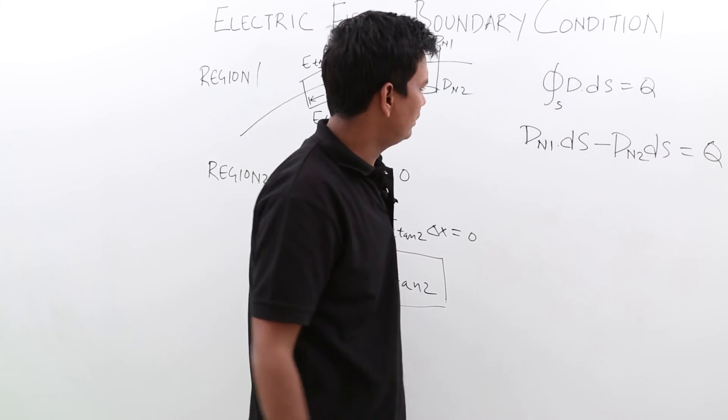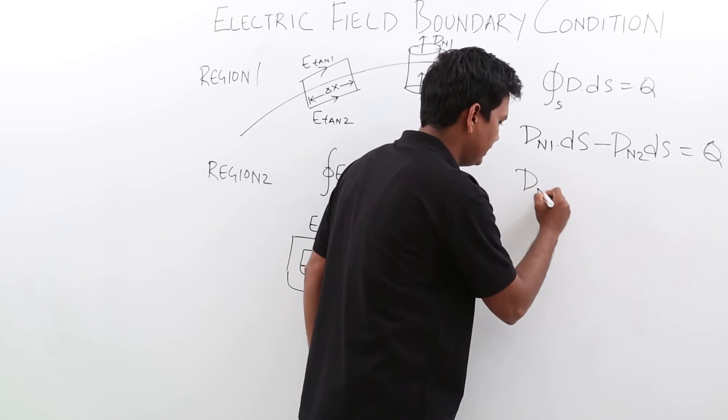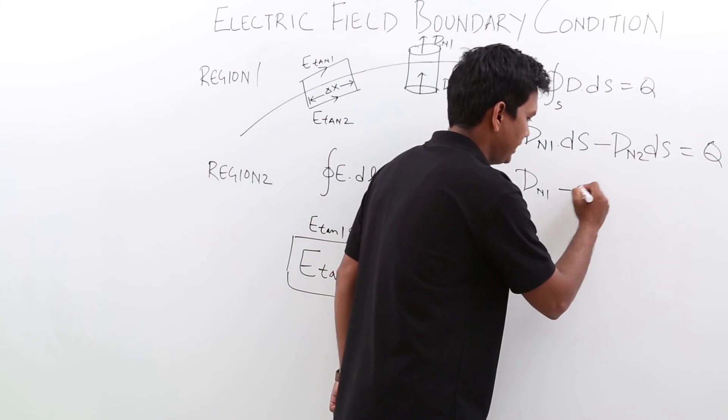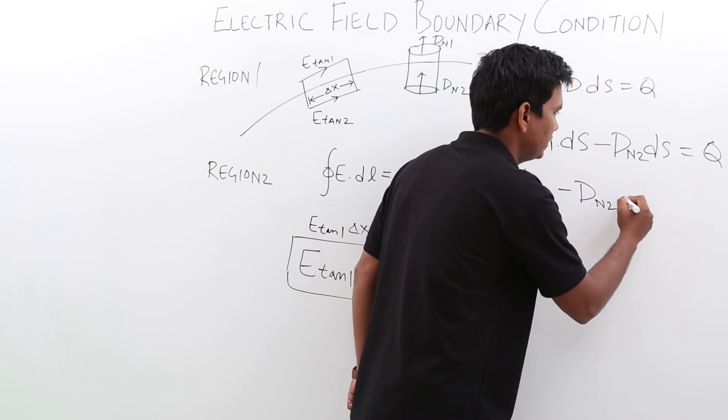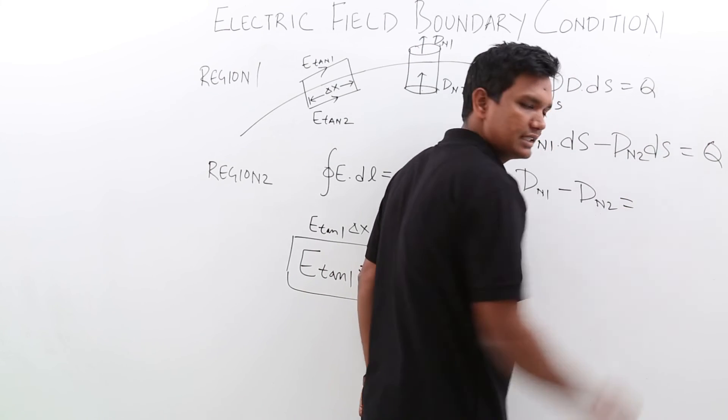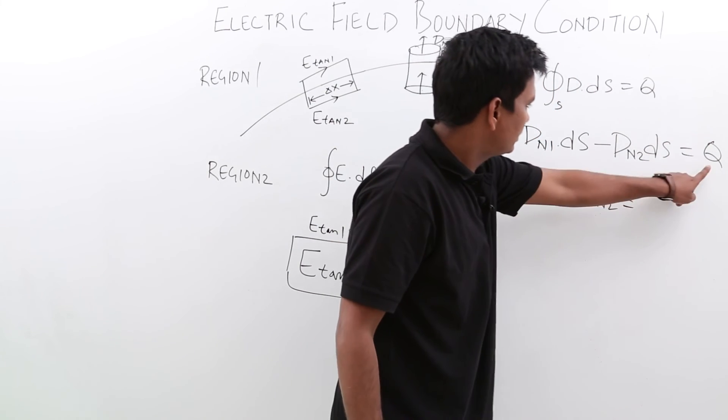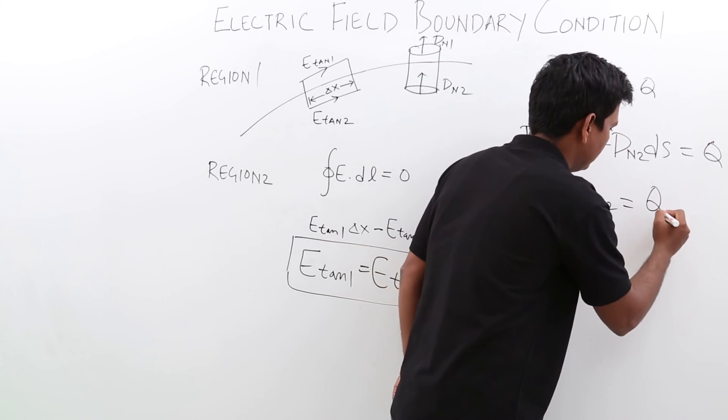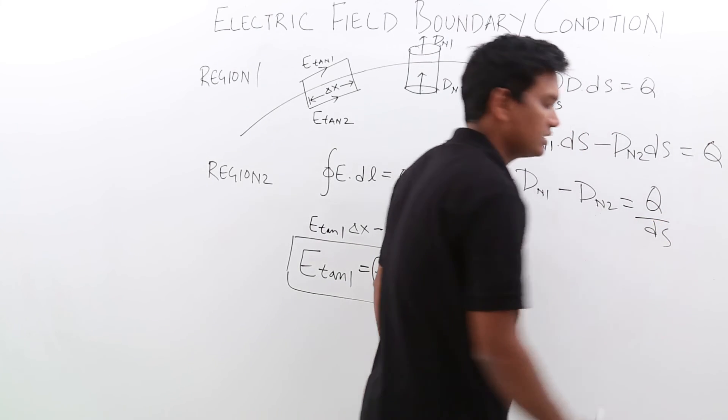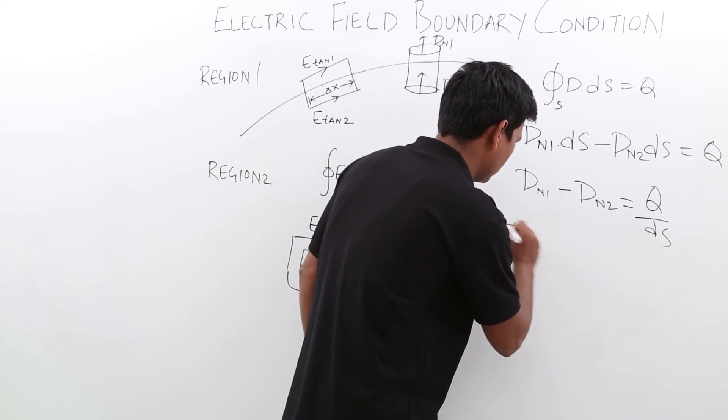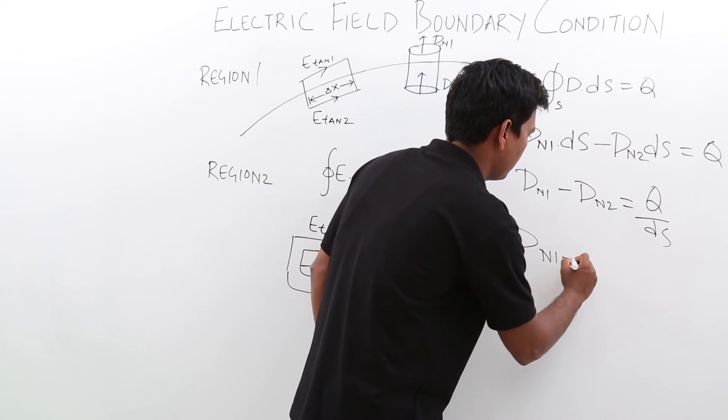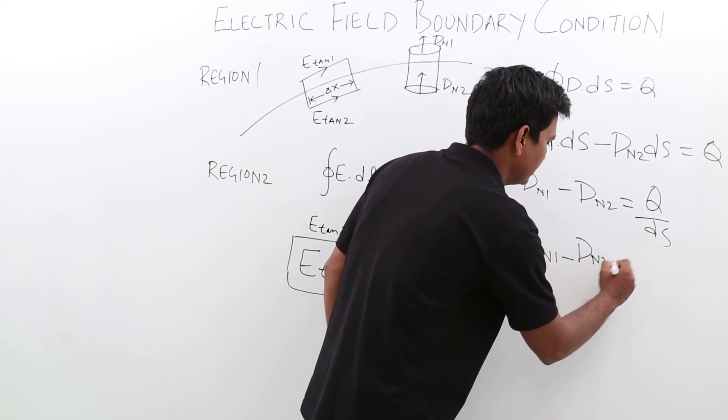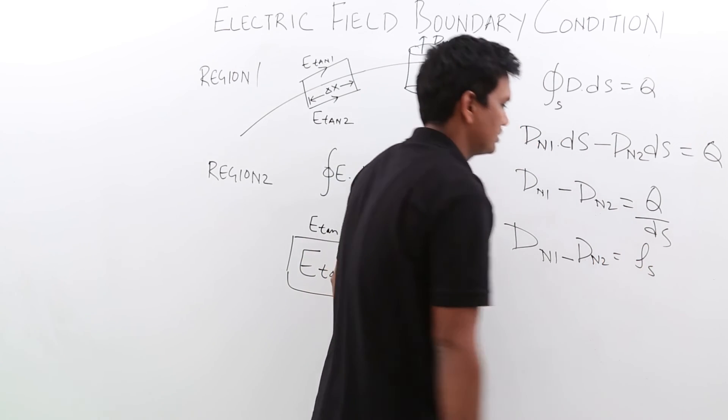Can I say that d n 1 minus d n 2 is equal to, if I take the ds to that side, it will become q by ds which is nothing but rho s. So it is d n 1 minus d n 2 is equal to surface charge density.